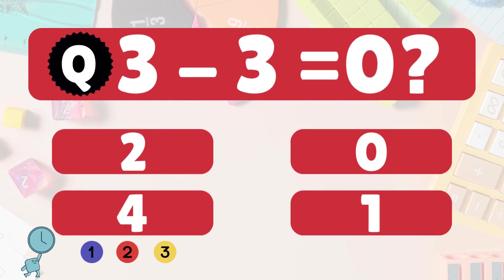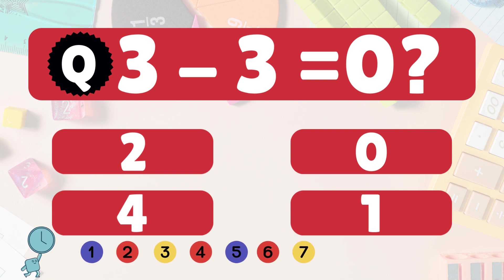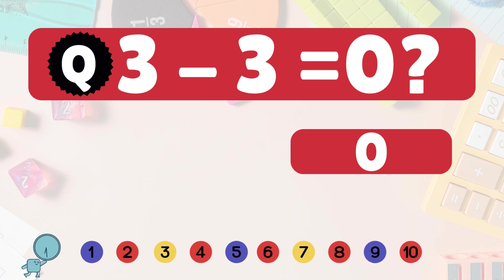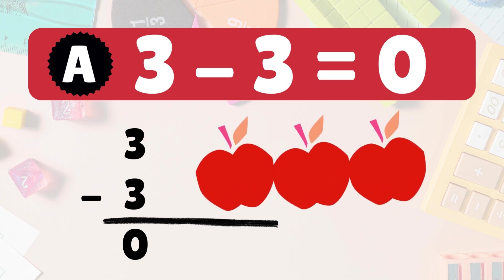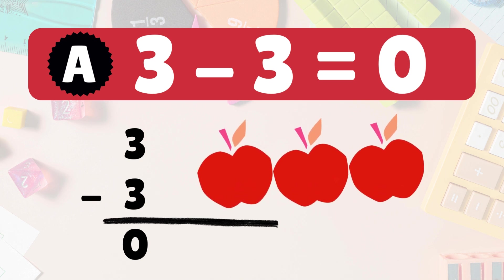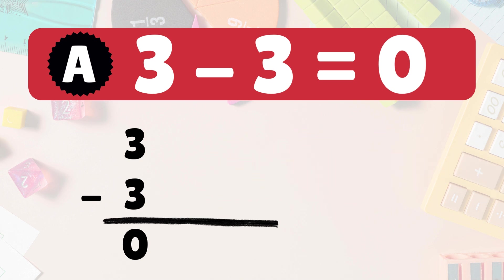3 minus 3 equals what? 3 minus 3 is 0. Here we have 3 apples. Take 3 away. No apples left. So 3 minus 3 is 0.